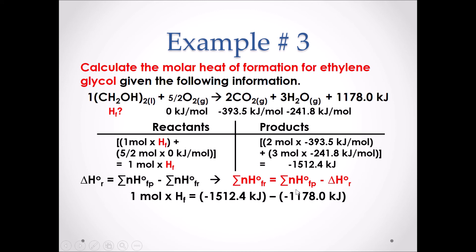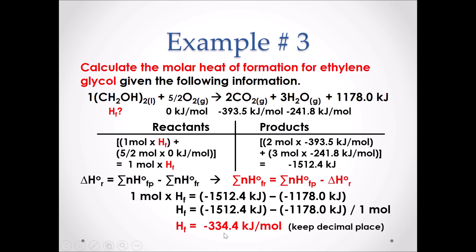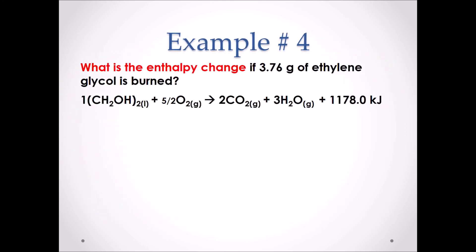This equals 1 mole times the molar heat of formation of ethylene glycol. Dividing by the coefficient of 1 in front of ethylene glycol does not change our answer. The molar heat of formation of ethylene glycol is negative 334.4 kJ/mol. This is an add-and-subtract calculation, so we use decimal places — one decimal place throughout gives one decimal place in the answer.